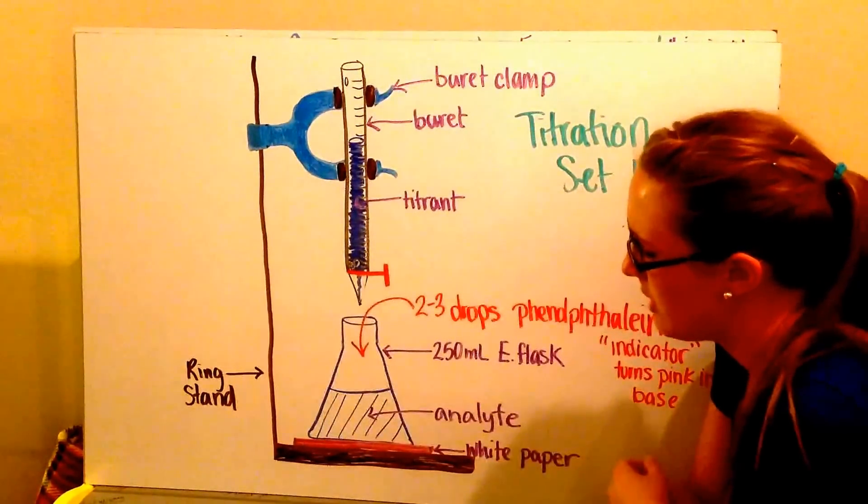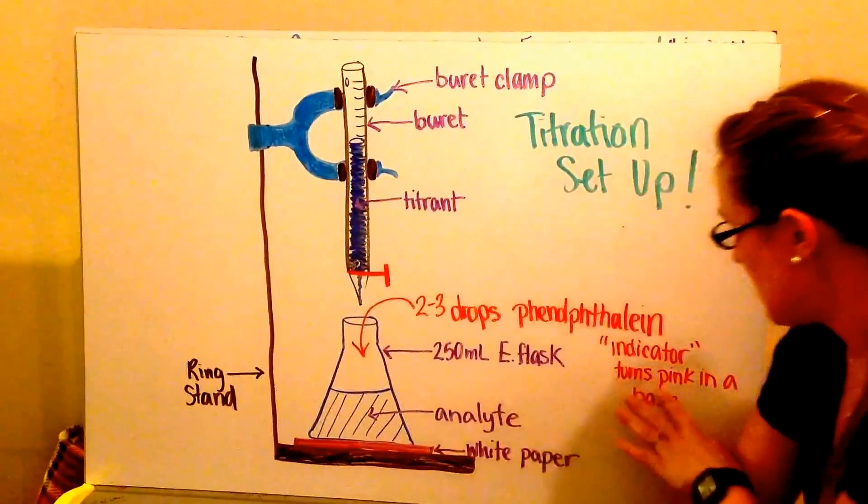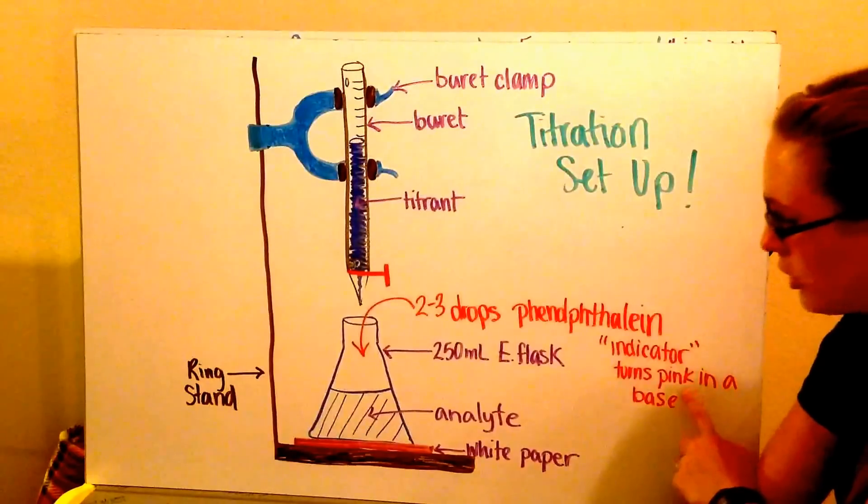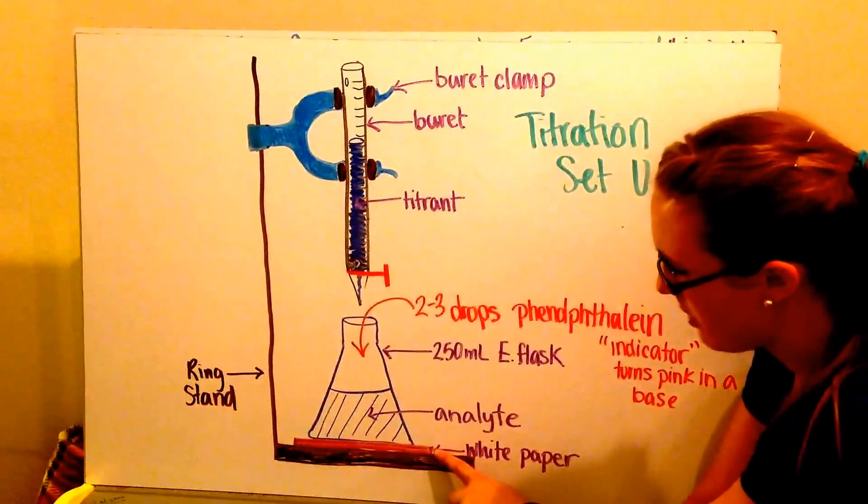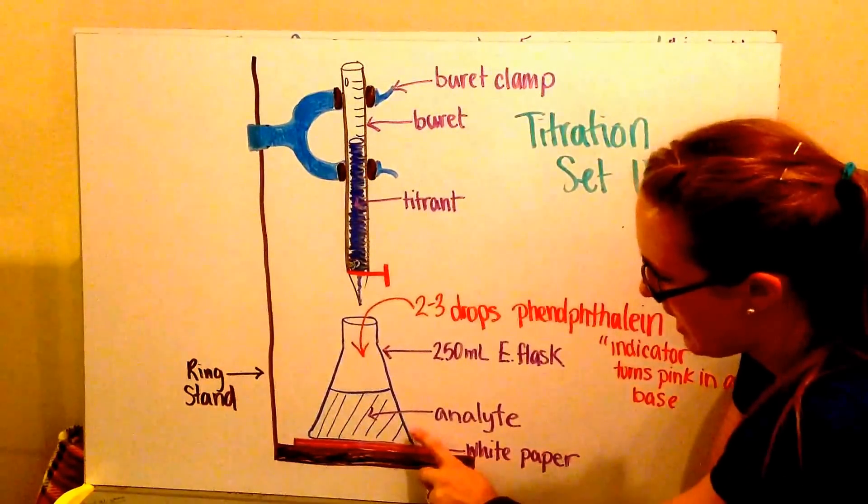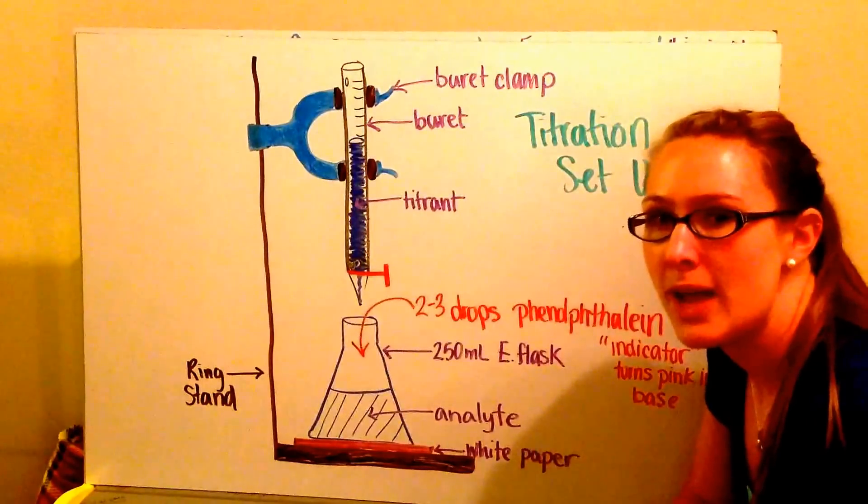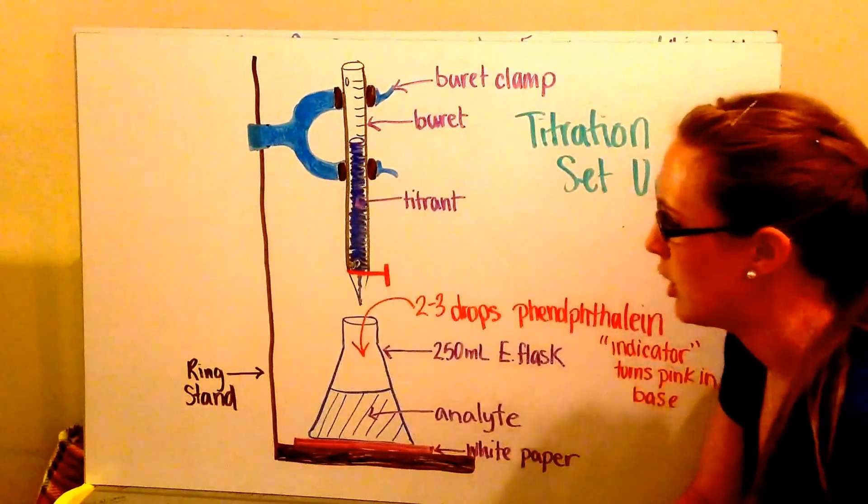The salt will be soluble in the solution. To see this very faint pink occur, I'm going to have white paper underneath my Erlenmeyer flask so I can easily tell if a color change has occurred.